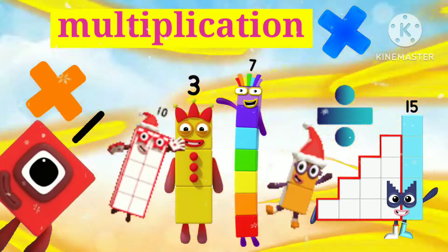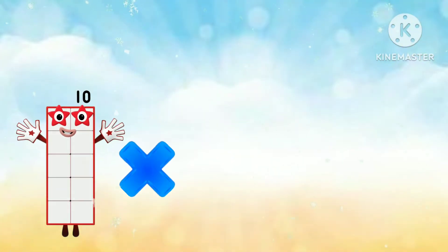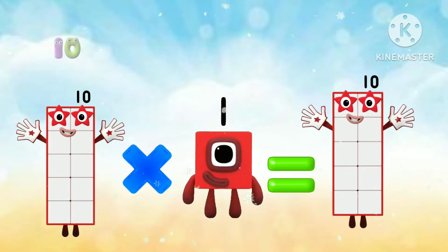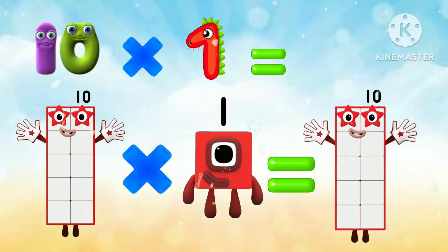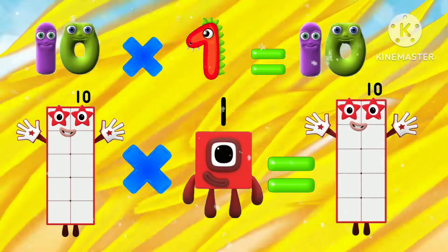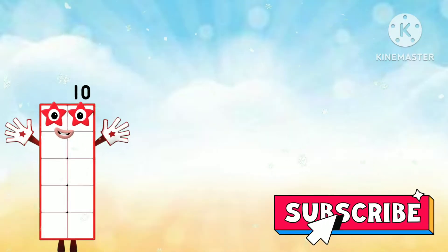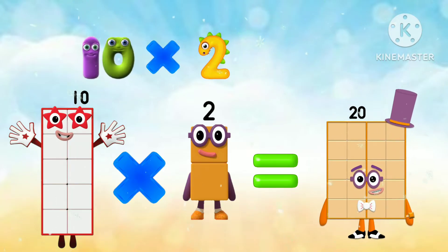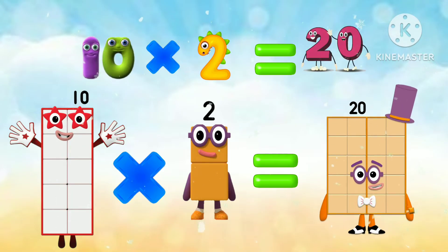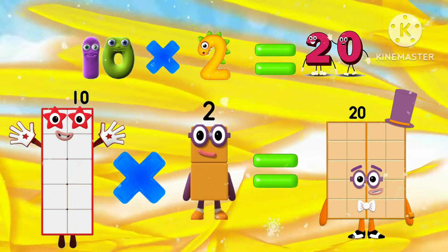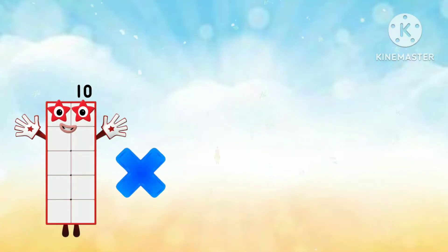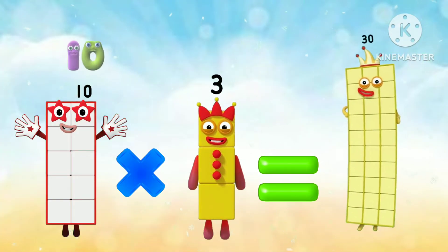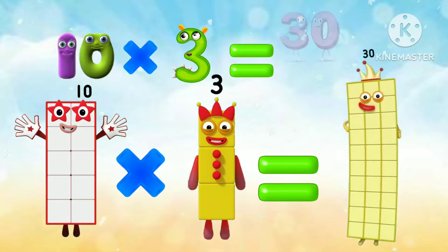Multiplication by 10. 10 once is 10, 10 x 1 equals 10. 10 2's are 20, 10 x 2 equals 20. 10 3's are 30, 10 x 3 equals 30.